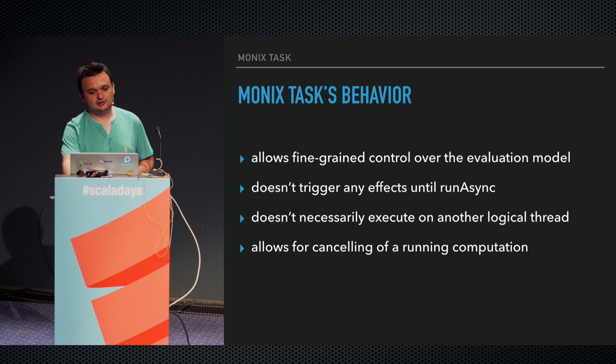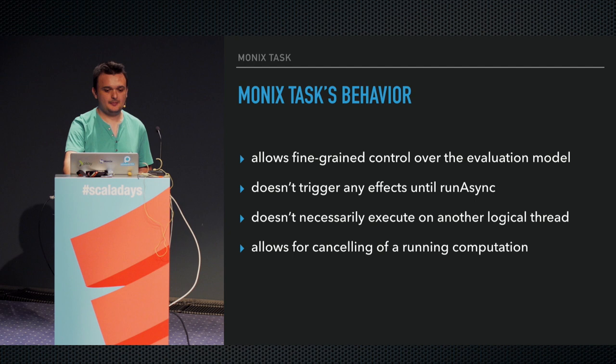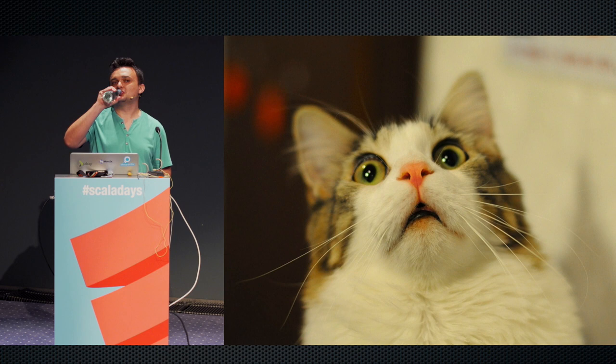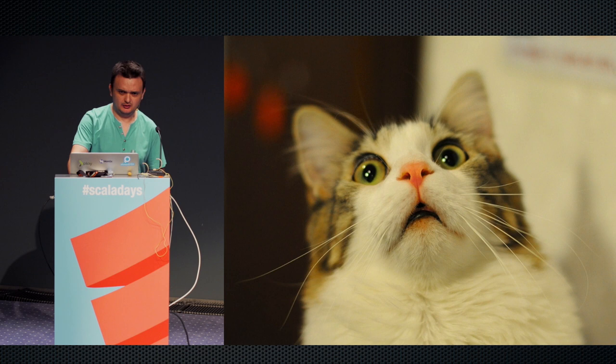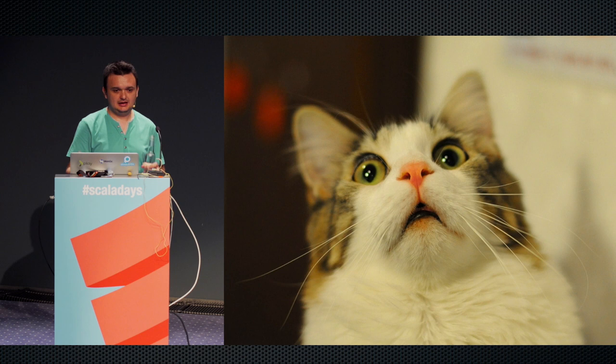To summarize the behavior of Monix's Task: it allows fine-grained control over the evaluation model. It doesn't trigger any effects until runAsync. It doesn't necessarily execute on another thread from where you're calling it. It allows for canceling of a running computation. These differences can require an adjustment period, especially because lazy Future abstractions aren't that popular in other stacks.